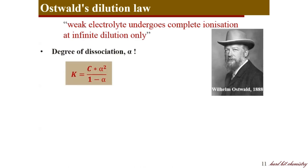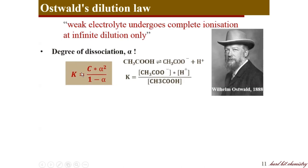Alpha relates the equilibrium constant or ionization constant and the concentration. For example, acetic acid — a weak electrolyte — ionizes to give acetate ion and proton, and the unionized acetic acid are in equilibrium with each other. This ionization constant K and the concentration of the electrolyte are related through the degree of dissociation α.